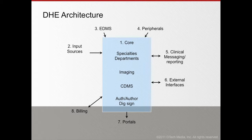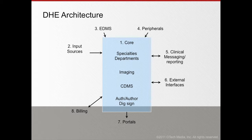The second component is input sources — modalities such as CTs, MRIs, EKG equipment, and anything that creates digital information that needs to be managed by the DHE. The third component is the EDMS — the electronic document management system. In many cases there is still a lot of paper: faxes, release forms, and other documents. We want to include all of them in the DHE system by scanning them in, identifying them with a metadata header, and ensuring they are properly archived and retrievable.